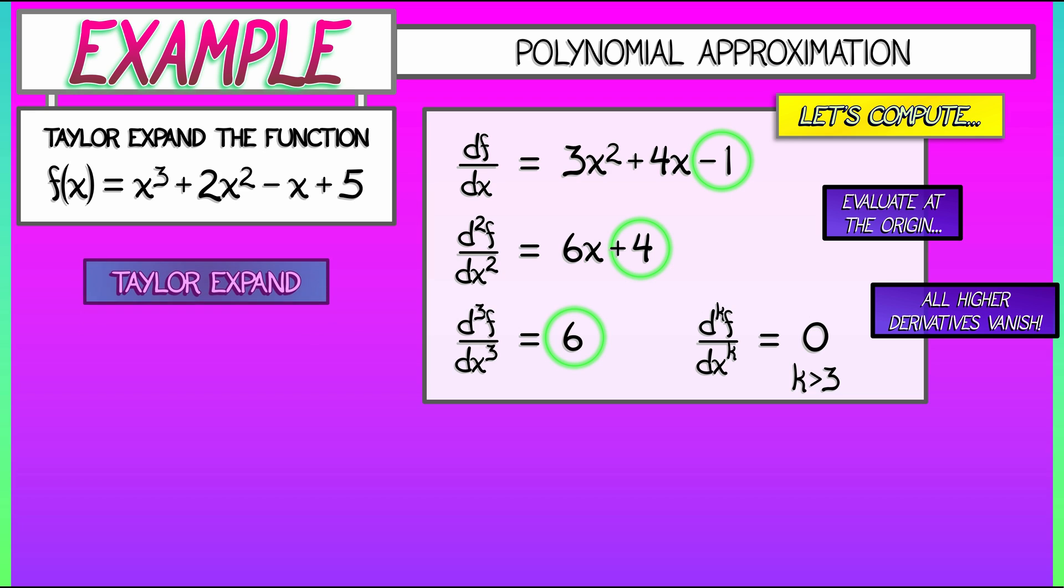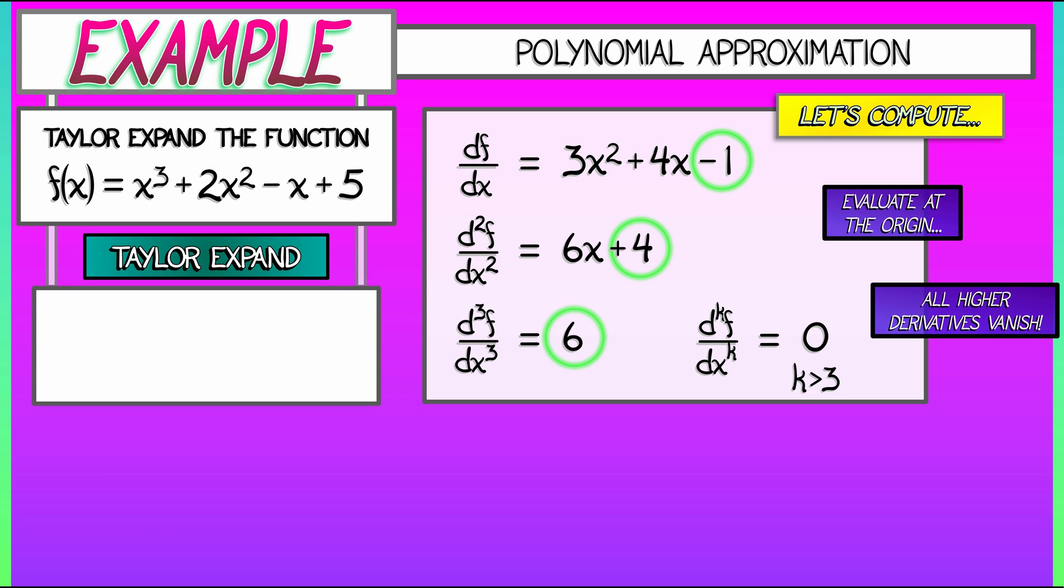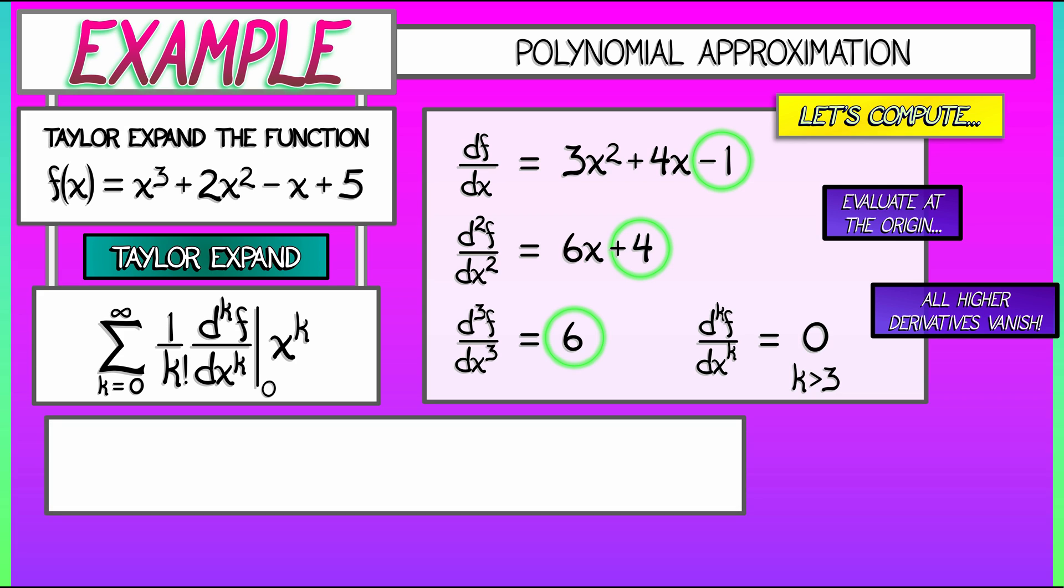Now, we can Taylor expand this function f by computing the sum, k goes from 0 to infinity, 1 over k factorial, k-th derivative of f evaluated at 0 times x to the k. Let's follow that. What happens when k equals 0? Well, we just get 5. Where did that come from? We have to evaluate f at 0. And, of course, that's just the constant term.